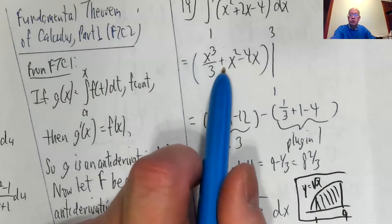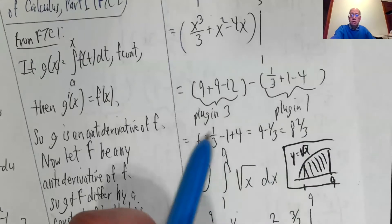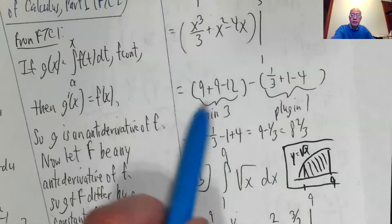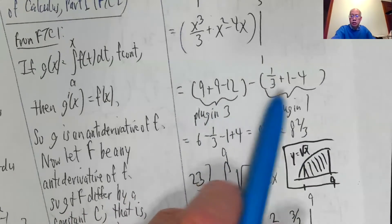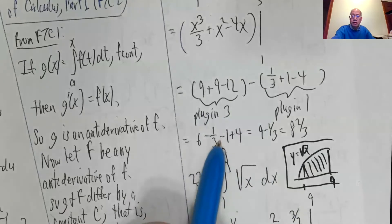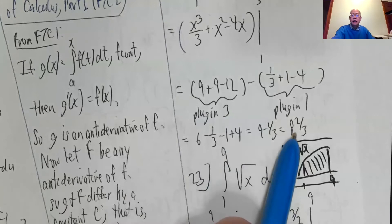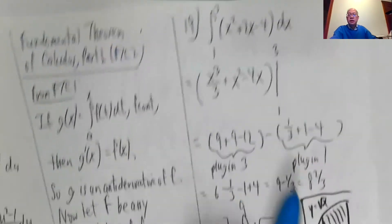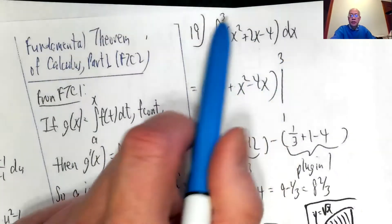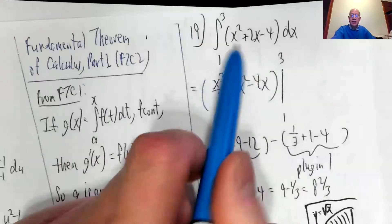Minus parentheses one third plus one minus four. This is six. And I decided to distribute a negative. So minus one third minus one plus four. That is six minus one plus four, nine minus a third, eight and two thirds. Eight and two thirds is the exact value of this integral. Not an approximation. It's exactly.